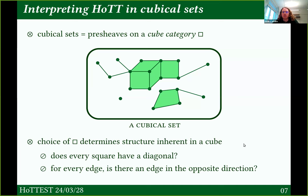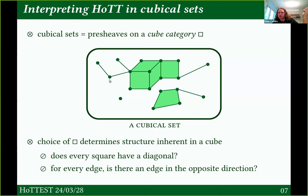For instance: does every square in the cubical set have a diagonal from bottom to top, or in the other direction? If I look at an edge — they're drawn in an undirected way, but in general they're directed — I can ask: for every edge in one direction, is there a matching edge going the other direction? By changing those parameters, I get cubical sets that look different.